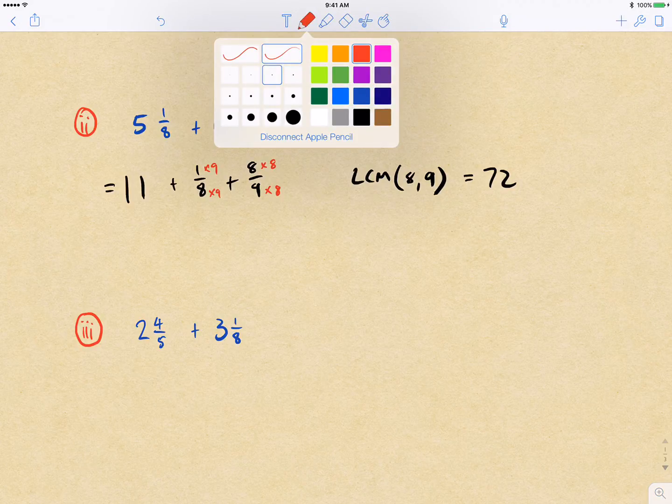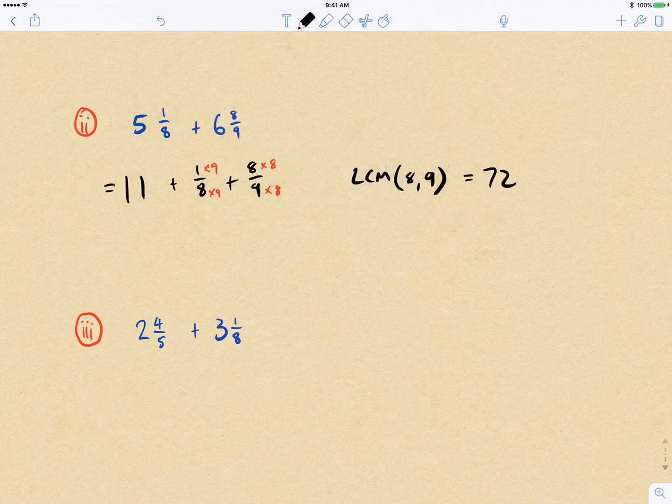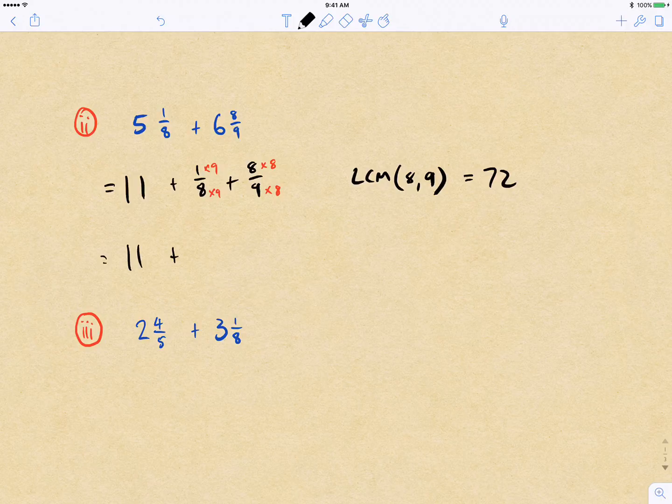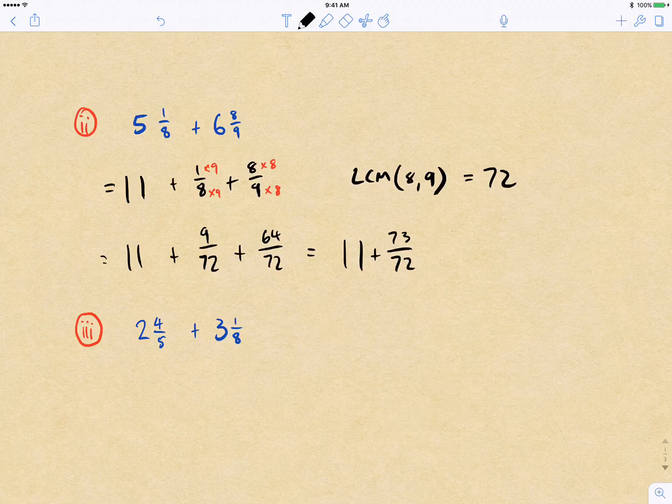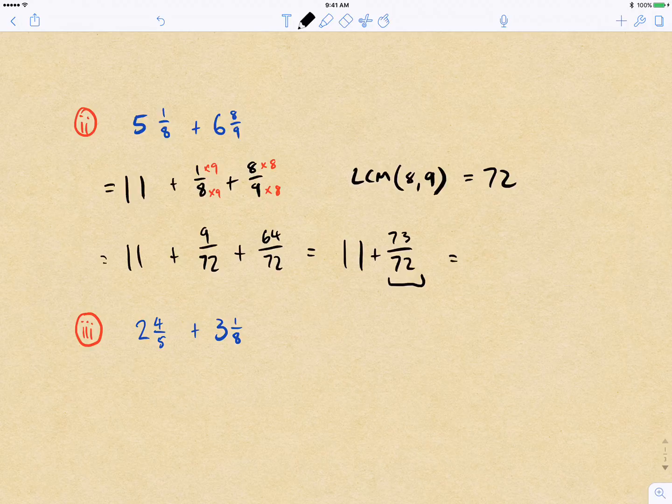So here we're going to be finding common equivalent fractions, multiplying the eighths by nine and the ninths by eight, so that we get seventy-tooths. So we have 11 plus 9 on 72 plus 64 on 72, which gives us 11 and 73 on 72, which simplifies into 1 and a seventy-tooth, so we get 12 and 1 on 72 is our final answer.